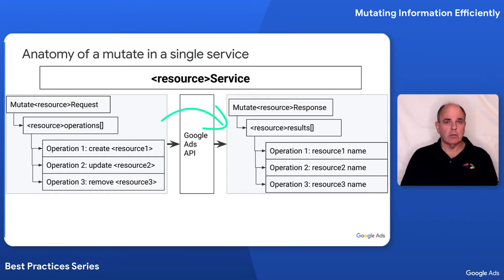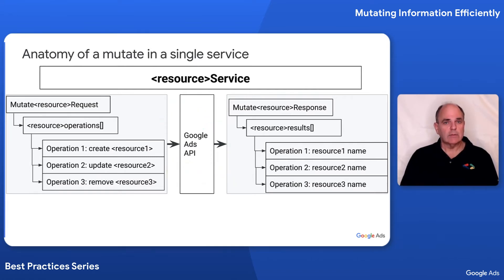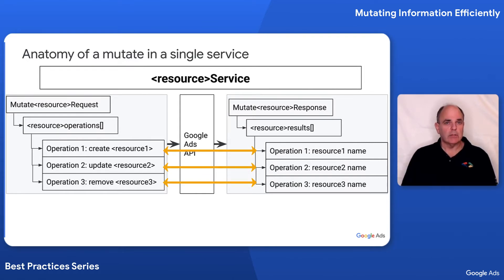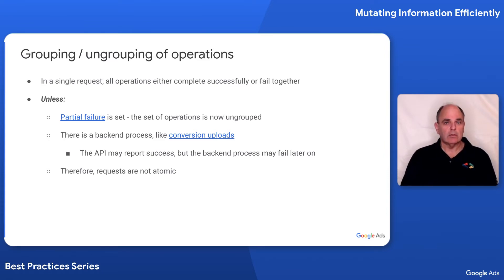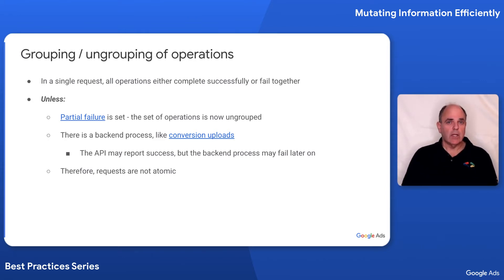The request gets sent to the Google Ads API. The response comes back with a set of results, and those results are in one-to-one correspondence with the set of operations — so each operation has a result. Operation 1 has result 1, operation 2 has result 2. When submitting multiple operations in a single request, by default all these operations complete successfully or fail together. If one of the create operations fails, all the operations will not execute and will be rolled back to their prior state.